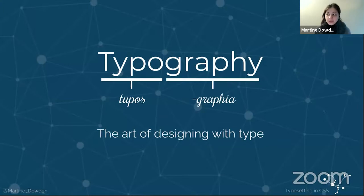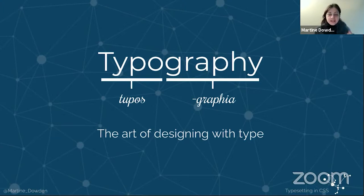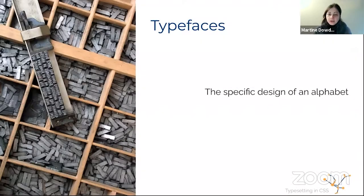So typography — what does it actually mean? It comes from the Greek 'typos' meaning impression and the Latin 'graphia.' We're mixing Greek and Latin, because of course we can. Basically it means the art of designing with type. So how do we achieve that on the web? The first thing we're going to look at is our typefaces. In common vernacular we usually say 'font,' but a typeface is essentially the whole family of fonts for a specific alphabet.